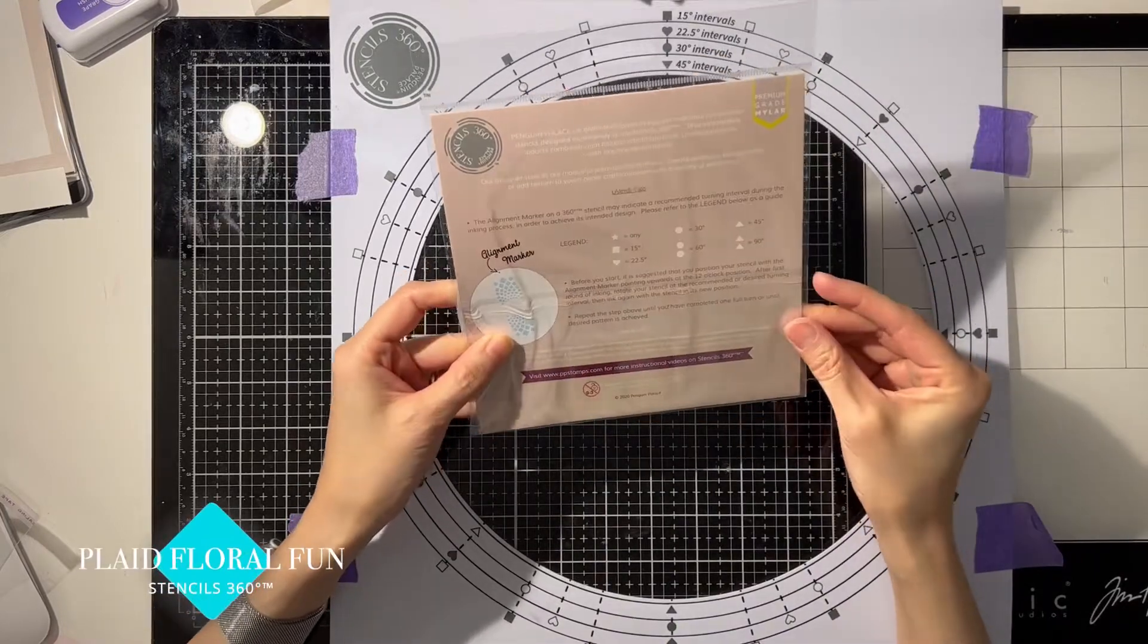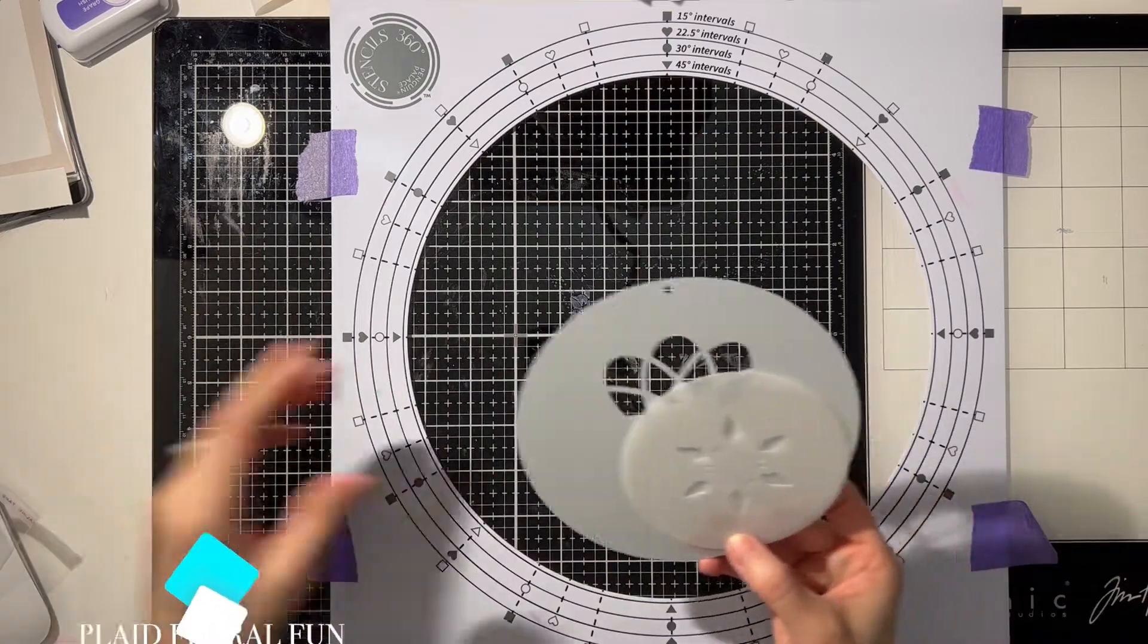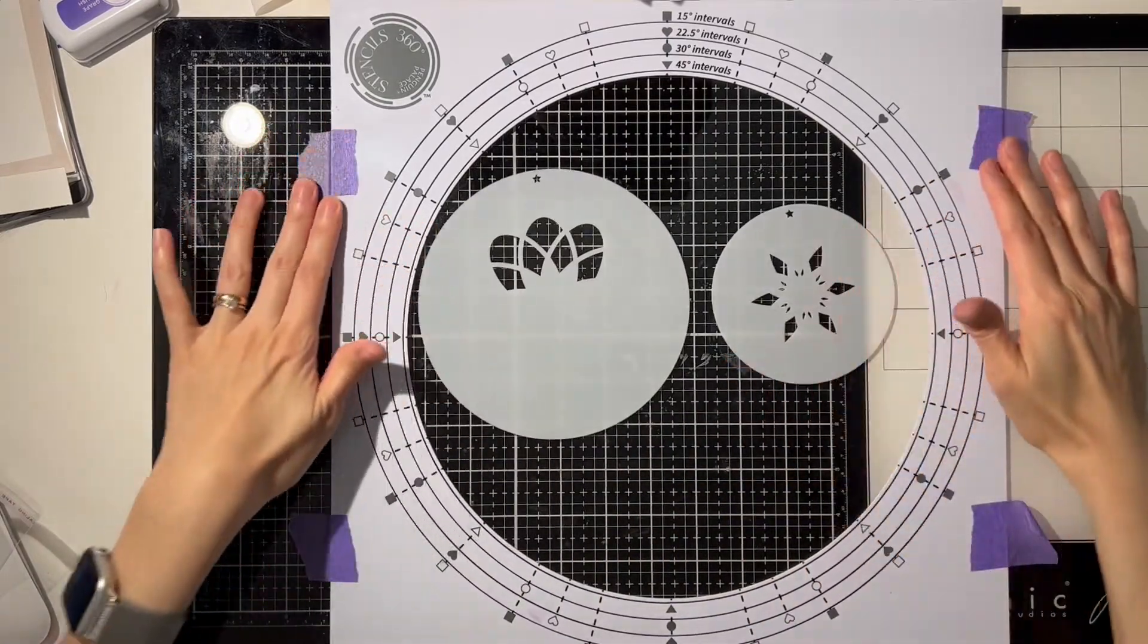Today's video features the Plaid Floral Fun Stencil 360. This set comes with two stencils, one 6 inches in diameter and the other is 4 inches.